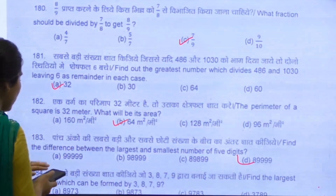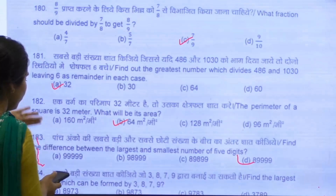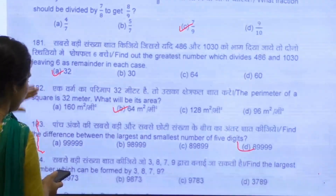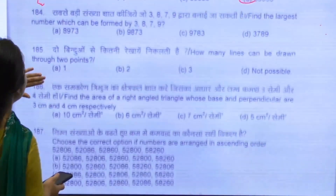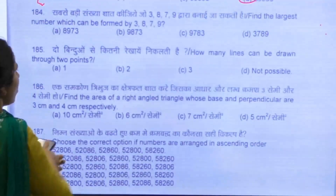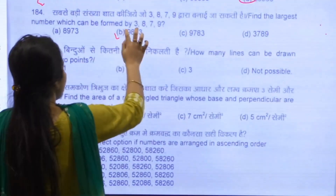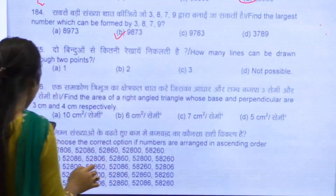184, we have B as our answer. This is question number 184. Option B is our answer.